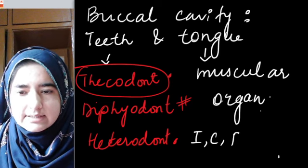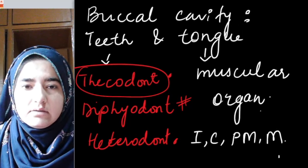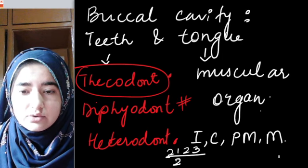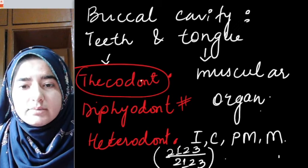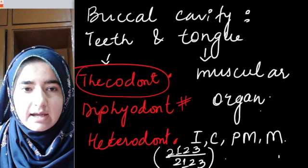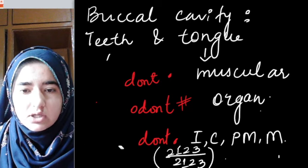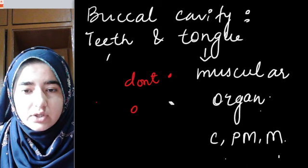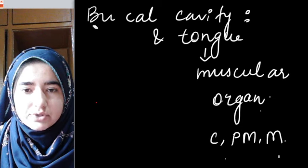The different tooth types are incisors, canines, premolars, and molars. The dental formula is 2-1-2-3 / 2-1-2-3. If you want to learn about this in detail, you can watch Part 1 of this chapter on digestion and absorption.